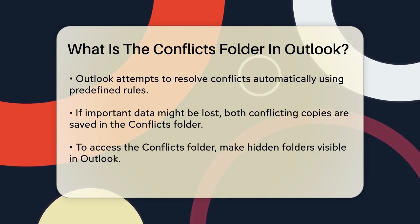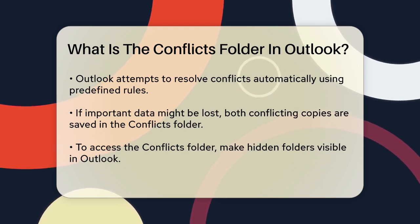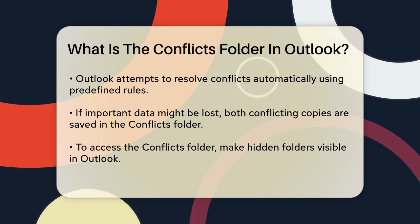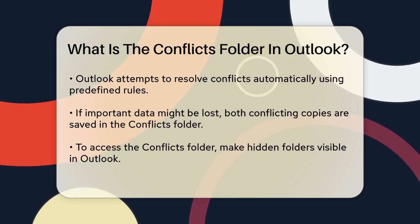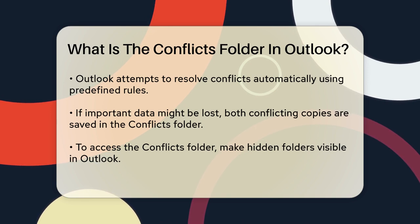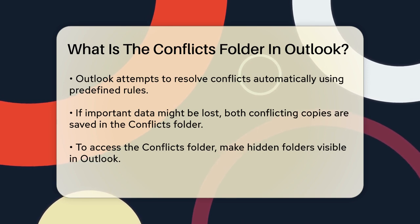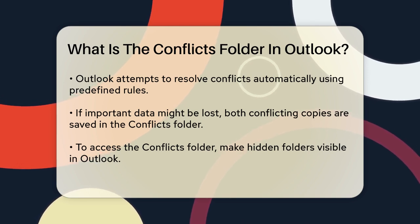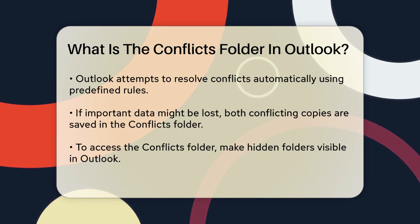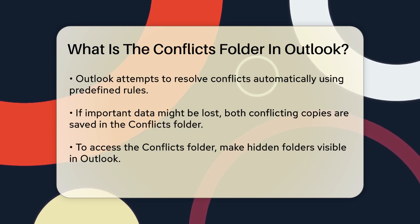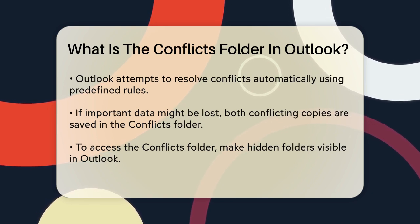Outlook tries to resolve these conflicts automatically. For standard Outlook items like emails, meetings, and contacts, it uses predefined rules to decide which version to keep and which to store in the conflicts folder. If Outlook thinks that the automatic resolution might lose important data, it will save both conflicting copies in the conflicts folder.